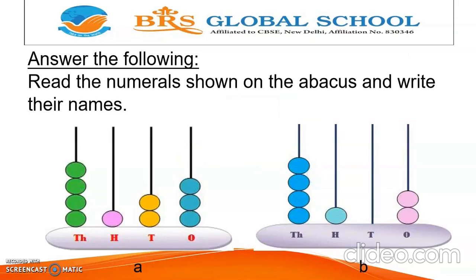Here is a small exercise for you. Answer the following: read the numerals shown on the Abacus and write their names. Two Abacus pictures are given — you have to count the beads and write the numbers and number names. If a particular place value doesn't have any beads, you have to write 0.